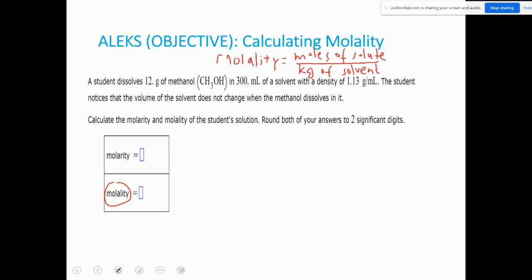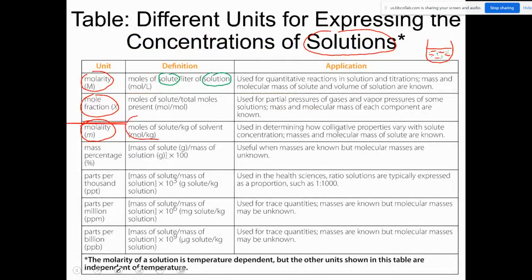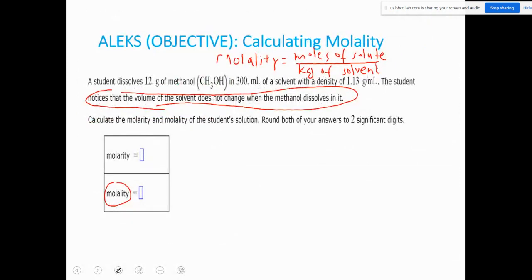Let me solve for molality using the same problem. The unit for molality is moles per kilogram. I already calculated the number of moles of methanol — that was 0.3745 moles. Now I need the kilograms of solvent. I've been given the volume of the solvent and its density of 1.13 g/mL.